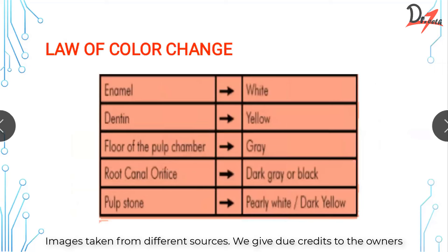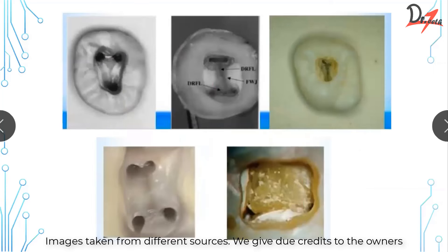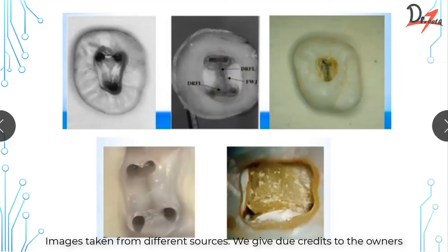The law of color change: each tissue of the tooth has its own color. Enamel appears white or translucent; dentin is yellowish; the floor of the pulp chamber is different; root canal orifices are very dark gray or black; pulp stones appear white and yellow. Because of these color differences, when you look at any access opening you can appreciate the orifices — they are very dark — and the floor. This is the dentine map: when doing access opening, the shape of the canals should be visible like a map.